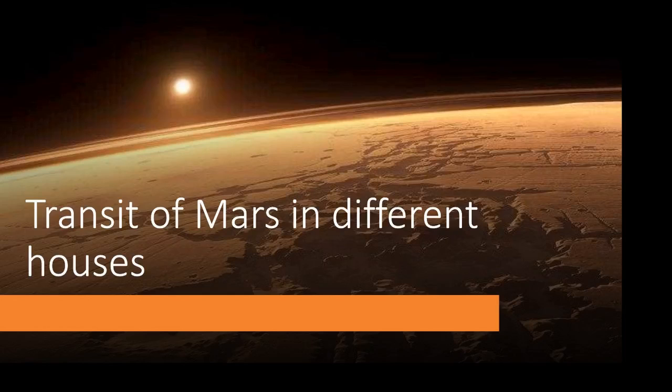Moving on to the fourth house. If Mars is transiting over this house, it might result in unrest. You might not feel peaceful at home, you might not feel bliss. If you have already Saturn, Rahu, or Mars present here in your natal horoscope, you might remain worried about home for one reason or the other. If you are a farmer and if you have Taurus, Cancer, Aquarius, or Libra in the fourth house, this transit might not be good for agriculture.